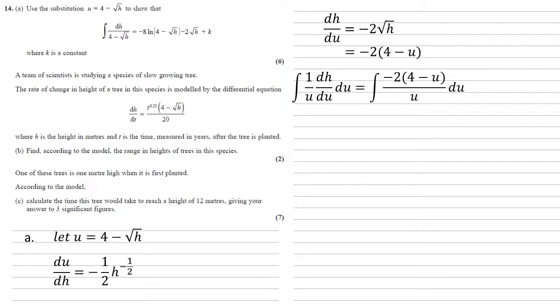Our original integral is dh over 4 minus root h. That's got 4 minus root h on the bottom, so if we make that into 1 over u, if we replace the dh with dh over du times du, we get the integral of 1 over u dh by du. We know what dh over du is, so now we've got the integral of minus 2 times 4 minus u all over u with respect to du.